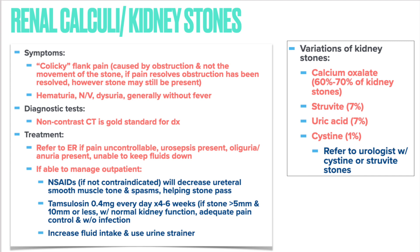Kidney stones have several types, with calcium being the most common — 60 to 70% of kidney stones are made of calcium. Symptoms include colicky flank pain caused by obstruction; when pain resolves, the obstruction has cleared but the stone may still be present. Other symptoms include hematuria, nausea, vomiting, and dysuria. Patients generally do not have a fever and are often visibly uncomfortable, frequently pacing.